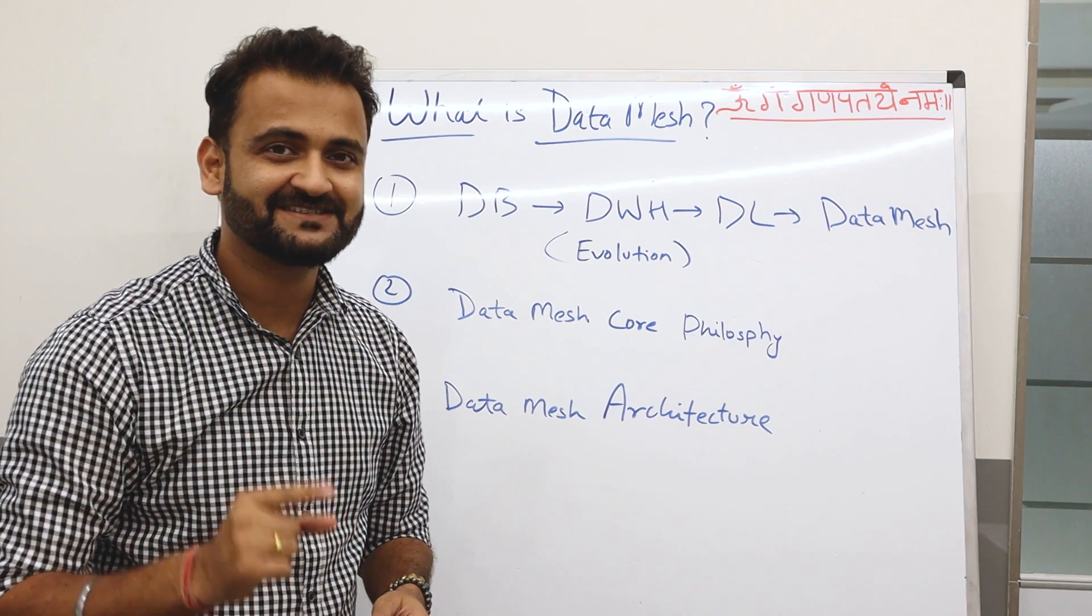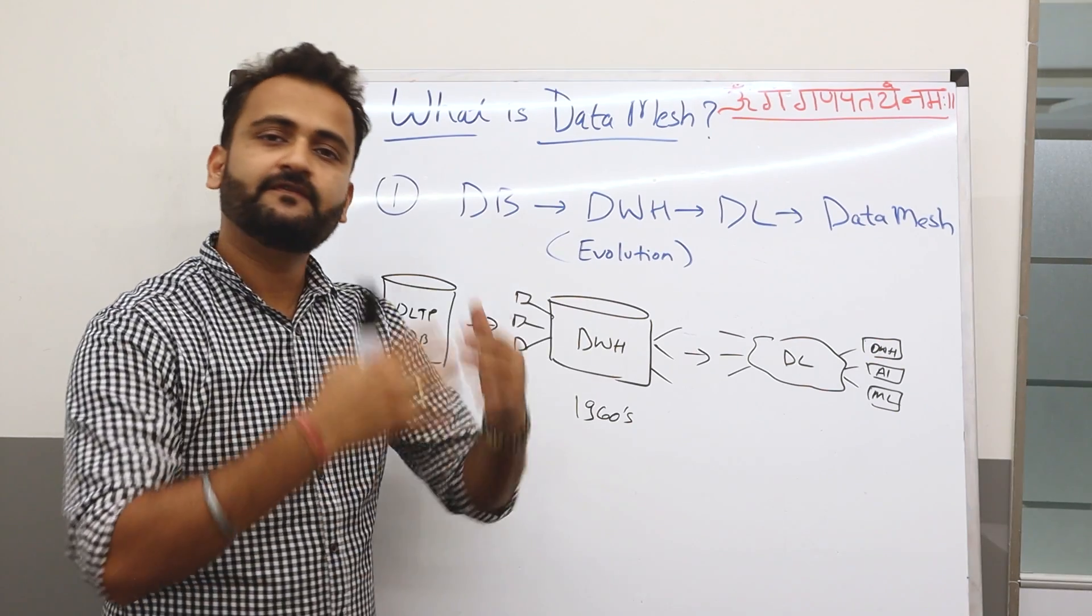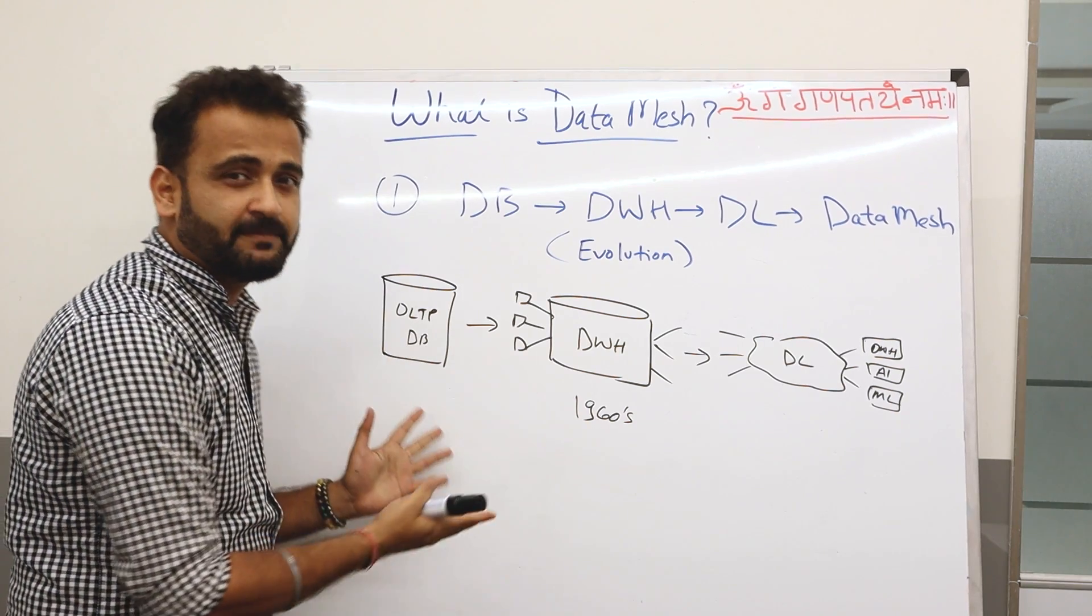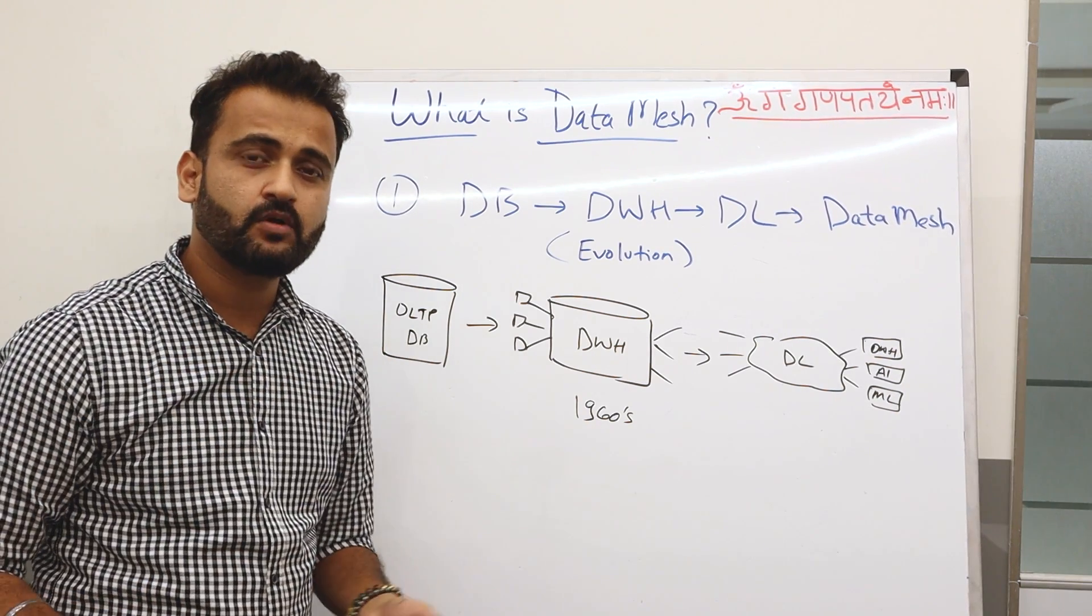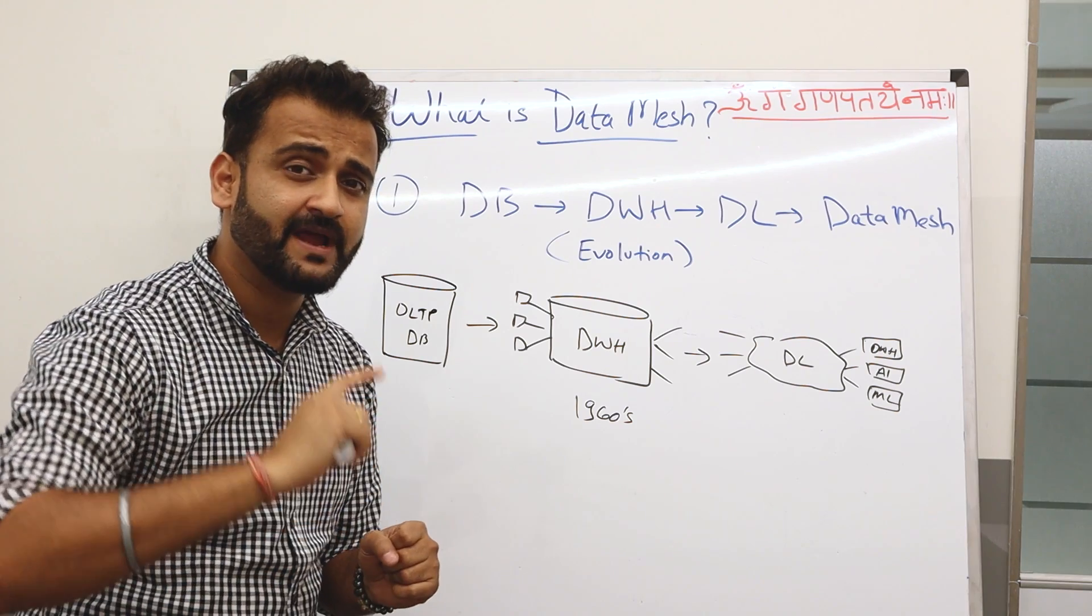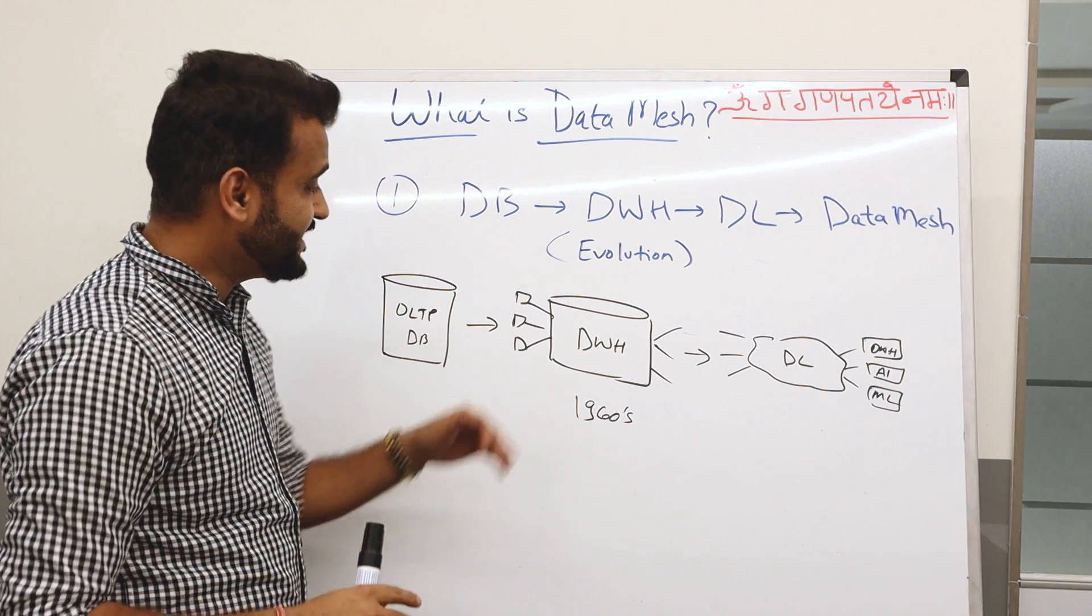Traditionally we only had databases, relational databases, which were all OLTP kind of databases. We have talked about this at length. If you want to understand in more detail, go and watch my What Is a Data Warehouse video.